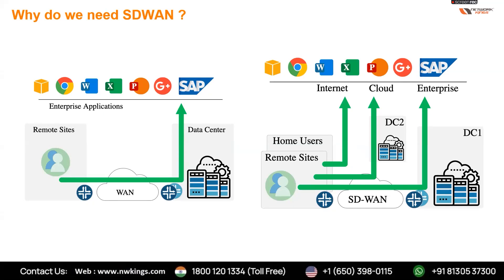In SD-WAN, the difference is that applications hosted in the data center can still be reached directly through the data center. However, for cloud or internet traffic, we can have a local breakout. This is more efficient — we don't have to send all data to the data center first.